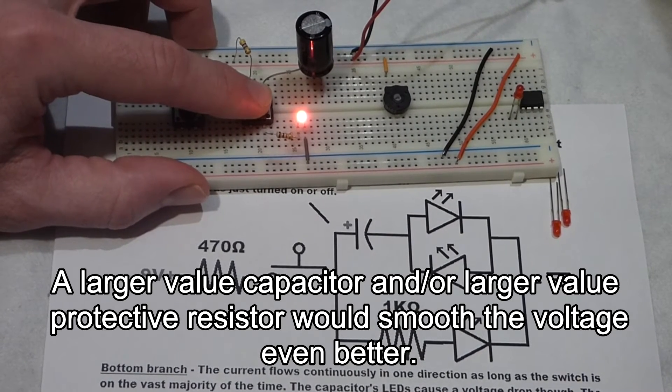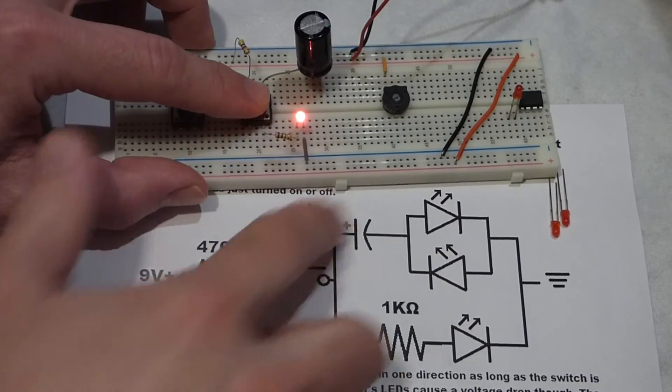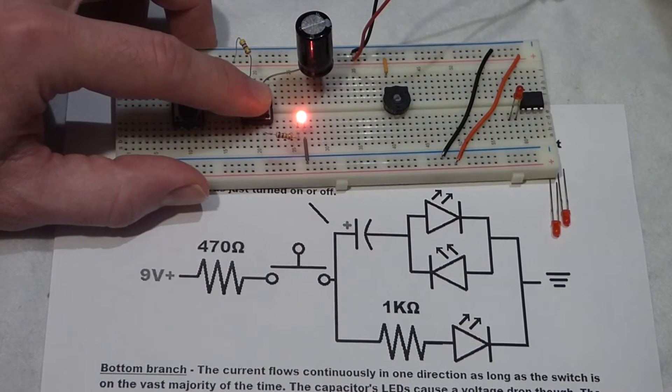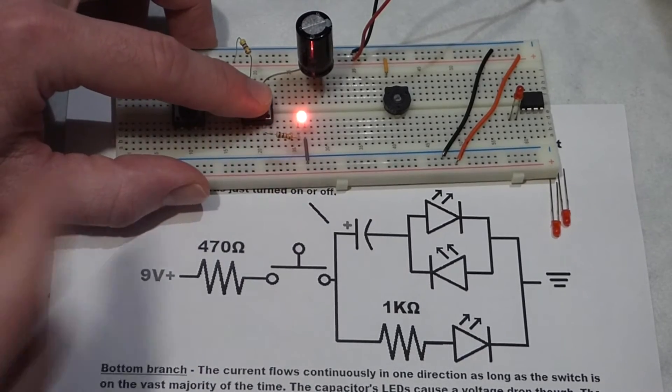The direct current is even better. Right now, the capacitor is blocking direct current from going through it, but it's letting alternating current go through it. And that's what's keeping the LED on, actually.